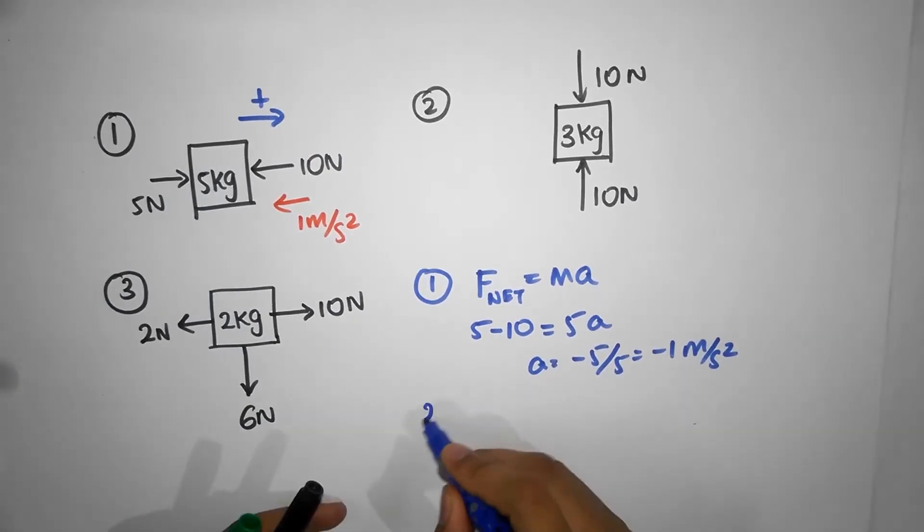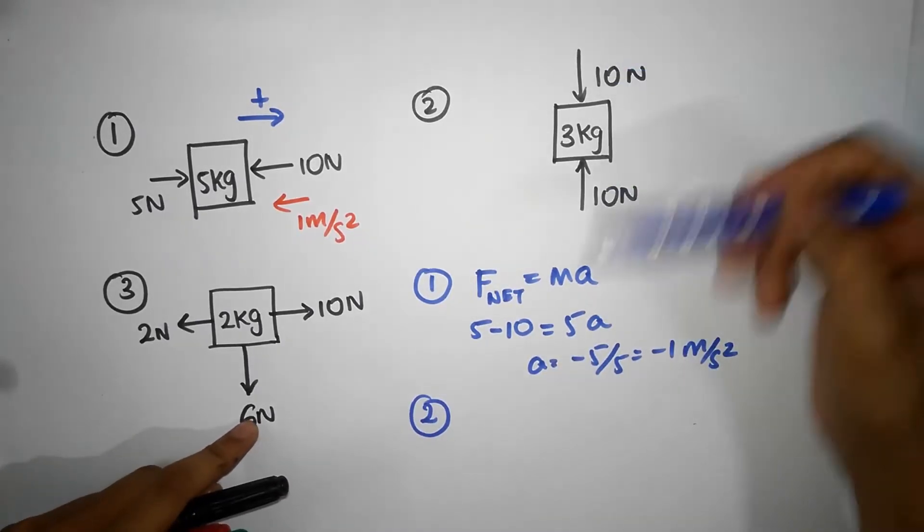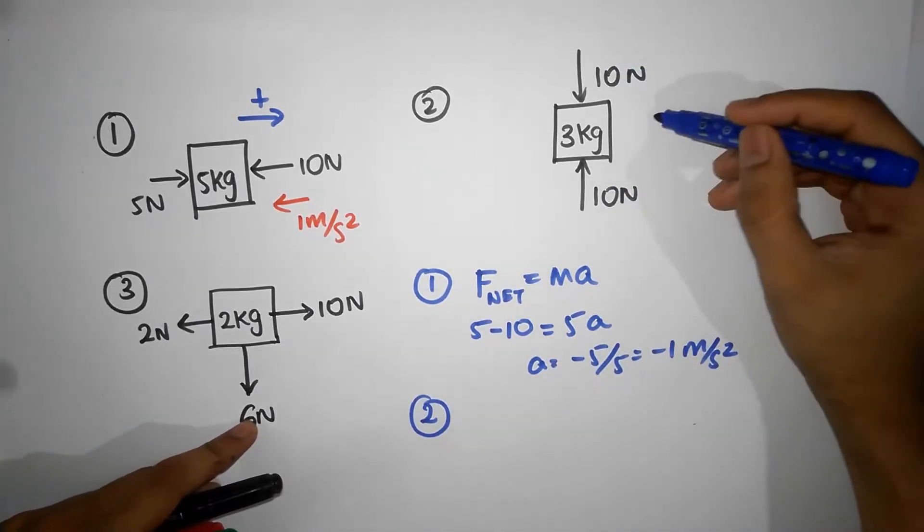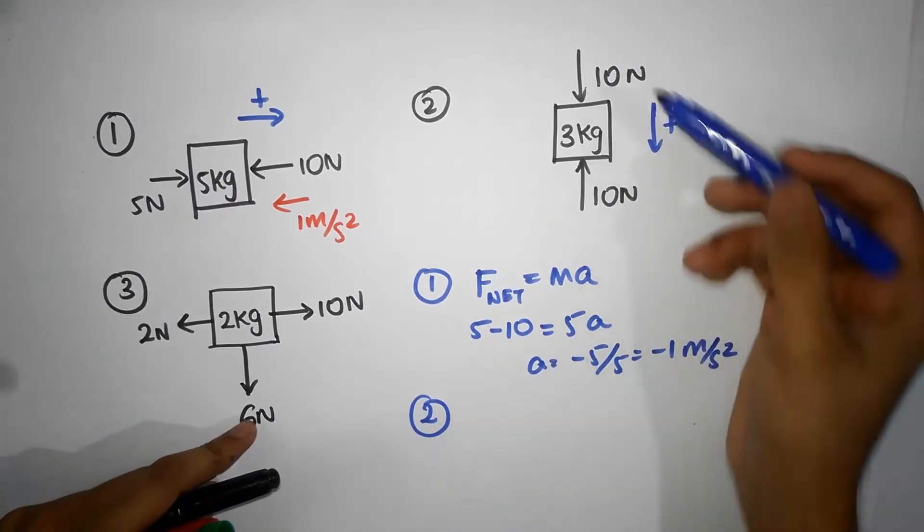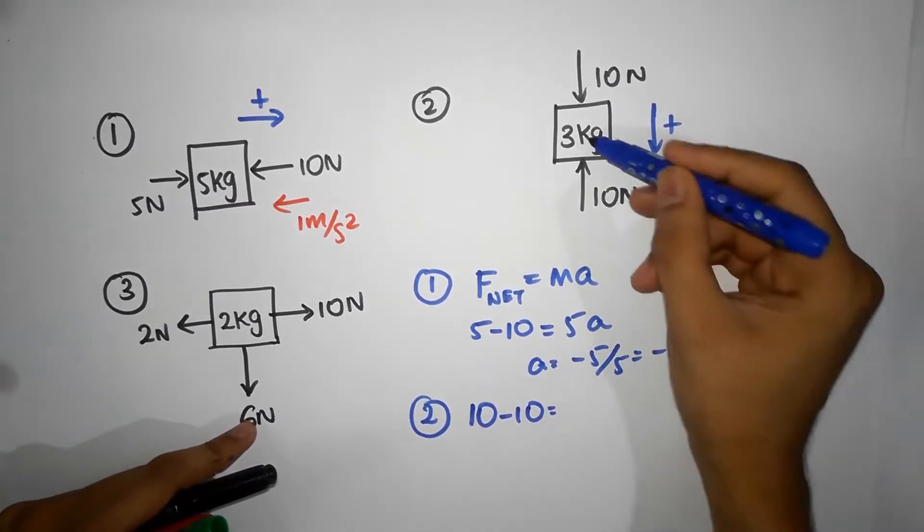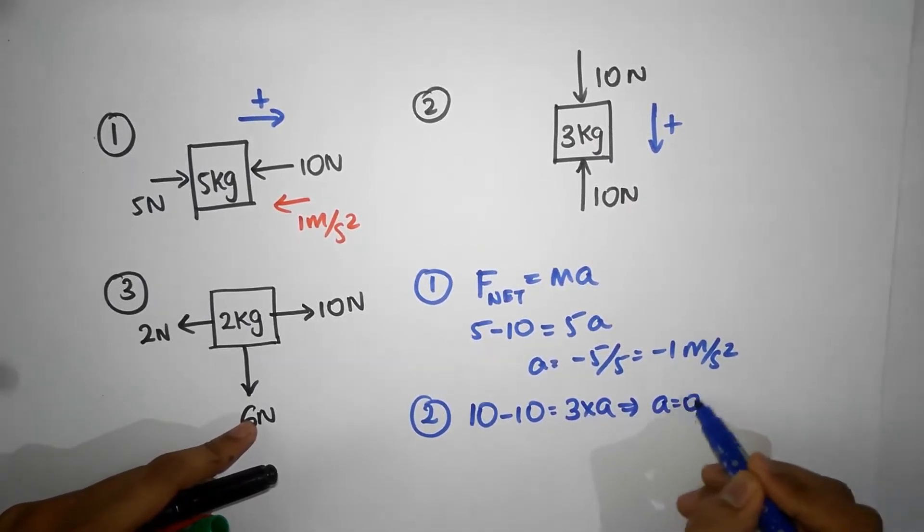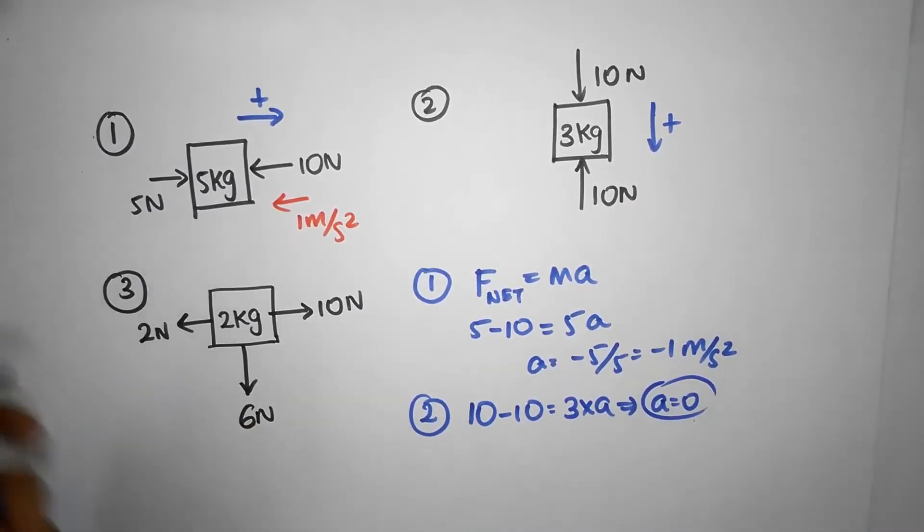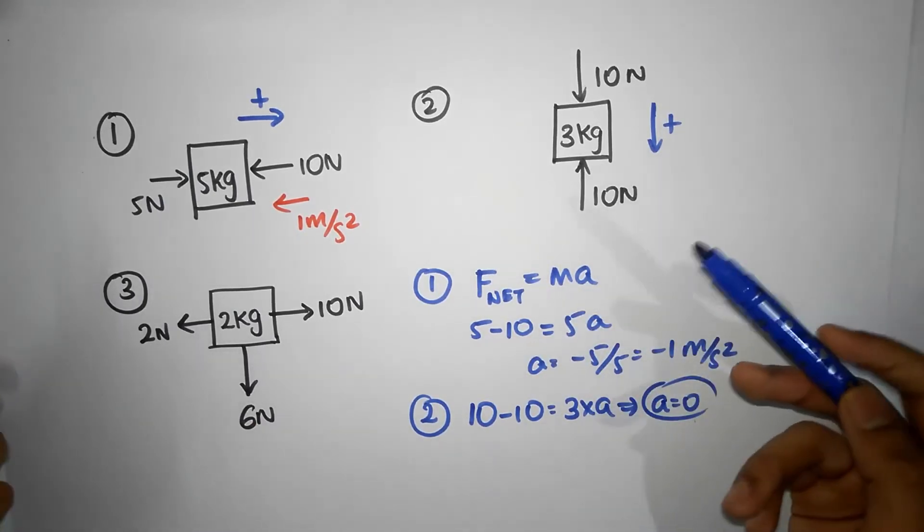Let's go to case number 2. In case 2, we have one force down, one force up. Again, I will do it in a systematic manner. Let's make upwards as positive. So, net force means there are two forces, 10 downwards, 10 upwards, that must be equal to mass times acceleration, and that gives you acceleration as 0, no surprise.